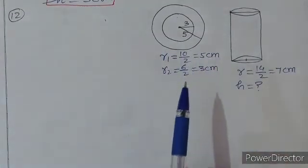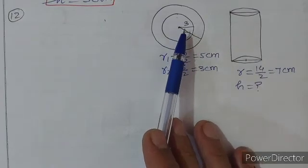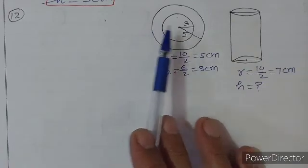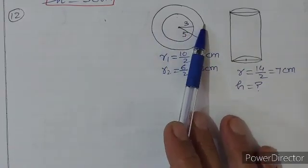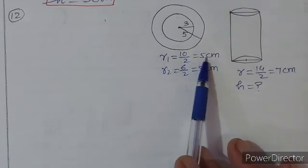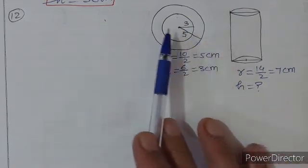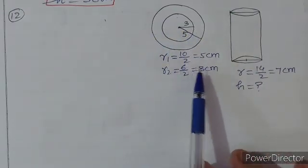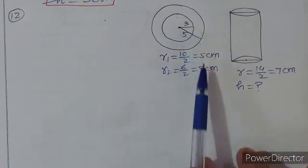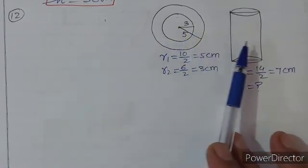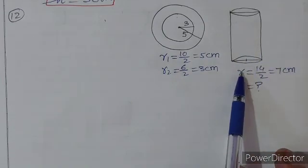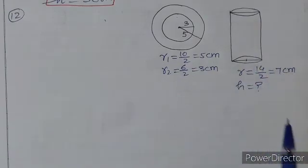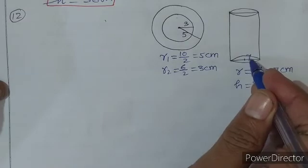Q12 में एक hollow spherical ball है जिसका external diameter 10 cm है, तो external radius = 5 cm। Internal diameter 6 cm है, तो internal radius = 3 cm। इसको melt करके एक cylinder बनाया गया जिसकी diameter 14 cm है, तो cylinder की radius = 7 cm। Height calculate करनी है।